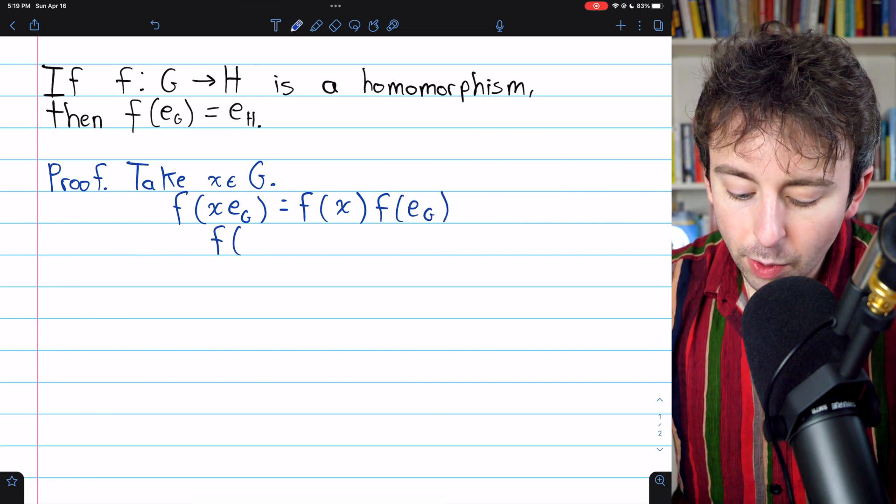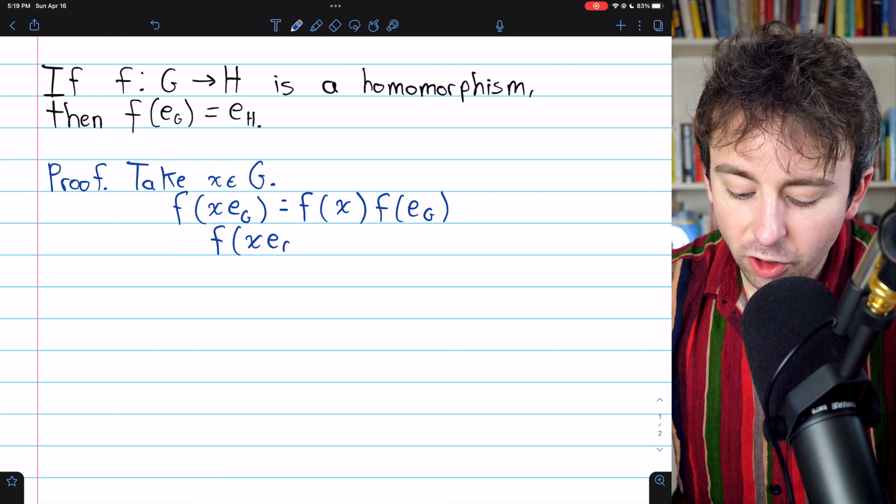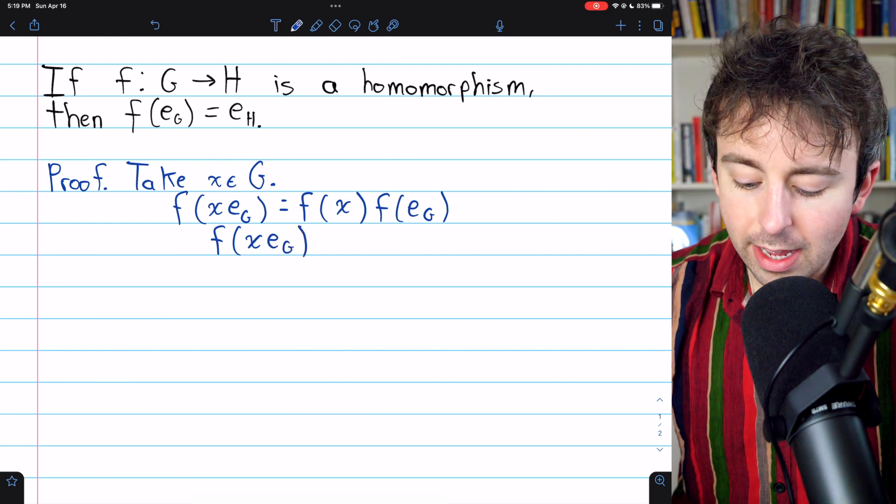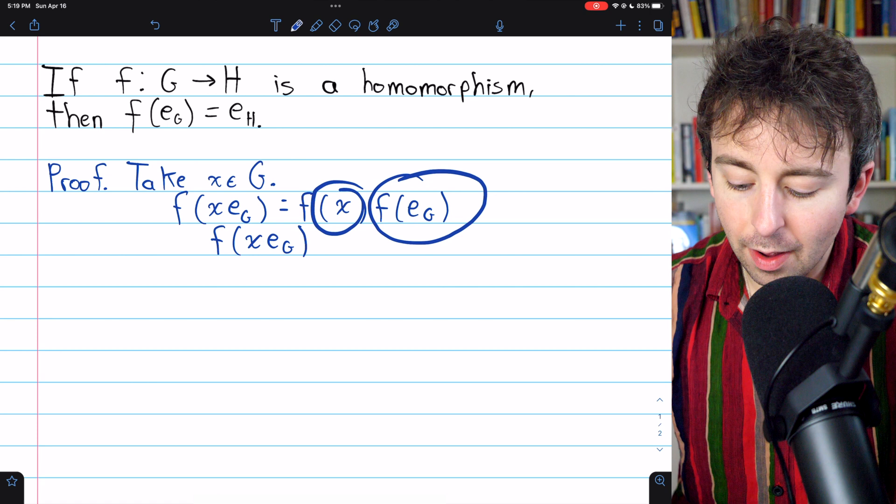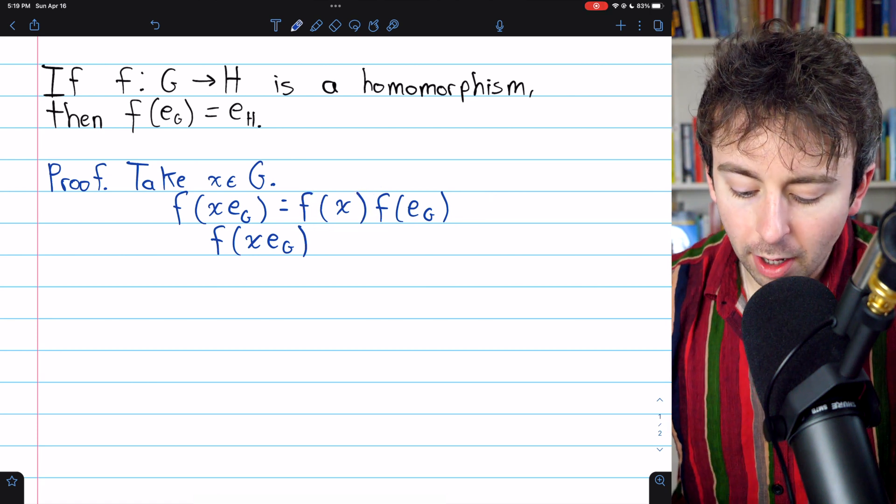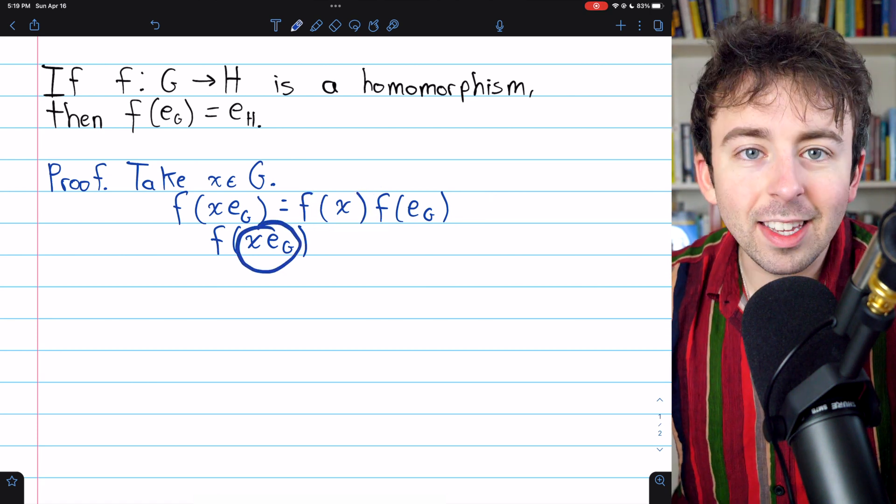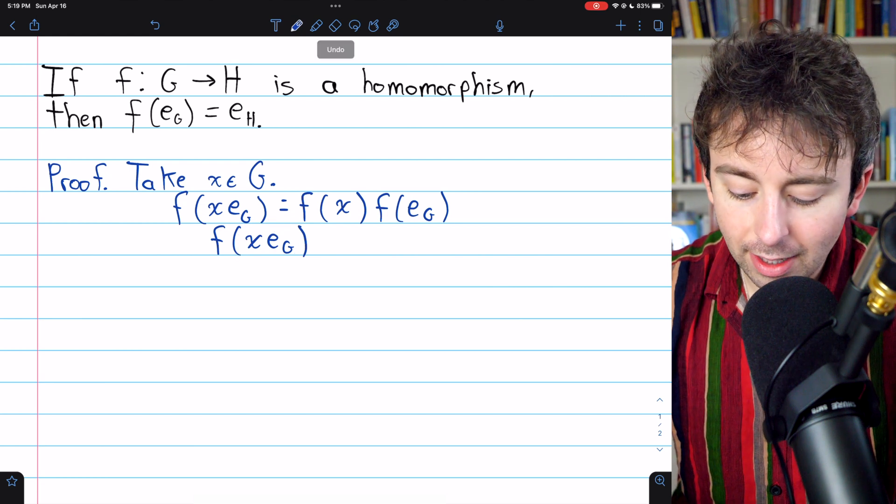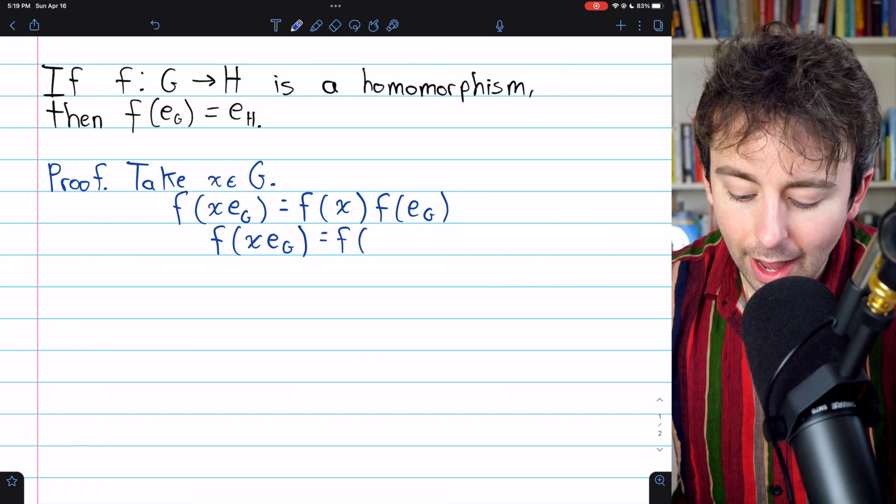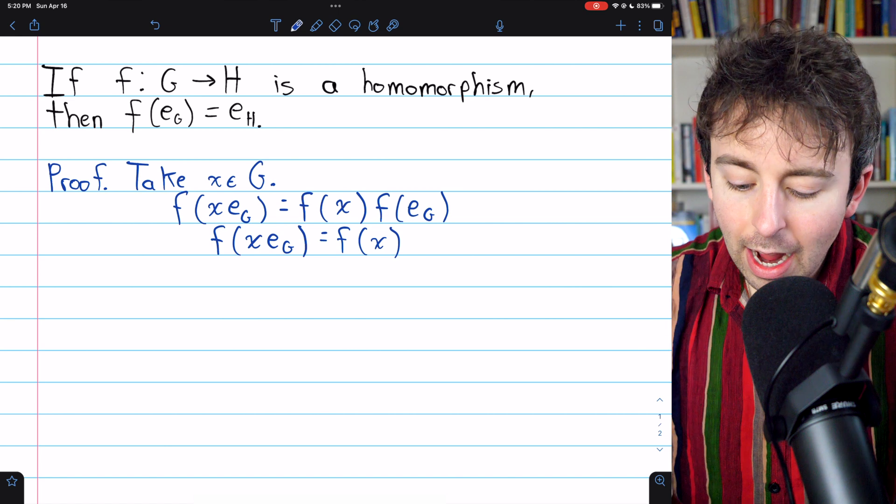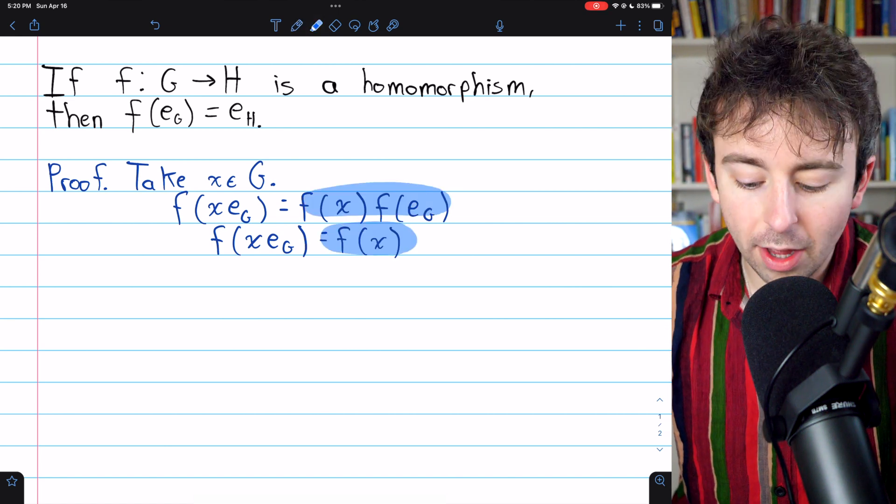However, there's another thing that we could say about f of x e_G as well. Not only is it equal to f of x times f of e_G put in the function separately, but also since e_G is the identity element, f of x e_G is the same thing as f of x. And so we could set these two things equal to each other.